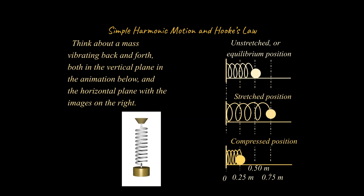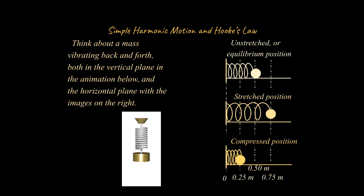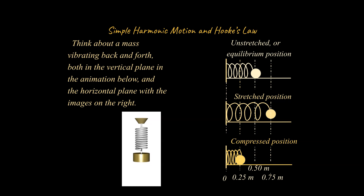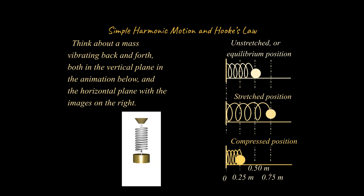Take a look at the animation here as well as this diagram on the right-hand side. You could think of motion in the vertical plane going up and down, or the horizontal plane going back and forth. That's an example of something called simple harmonic motion. It's a repeating back-and-forth vibration where the restoring force is proportional to the displacement.